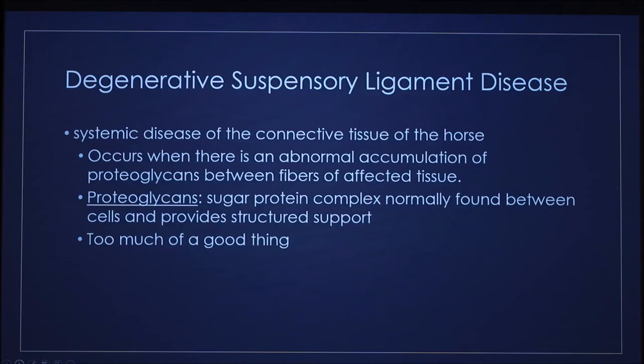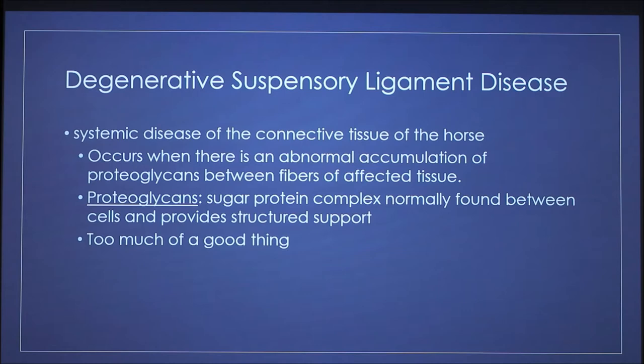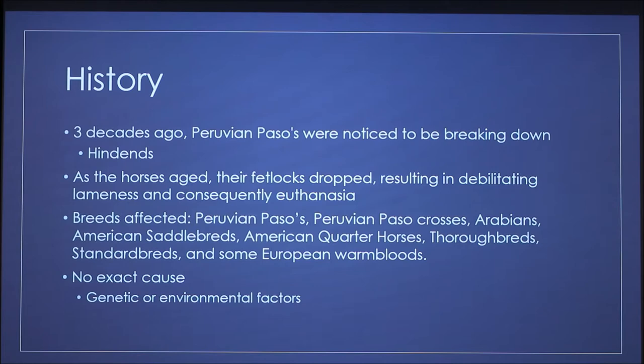Today I'm talking about equine DSLD, which stands for Degenerative Suspensory Ligament Disease in horses, but also goes by ESPA, which is Equine Systemic Proteoglycan Accumulation. It is a systemic disorder of the connective tissue of the horse. It occurs when there's an abnormal accumulation of proteoglycans between the fibers of the affected tissue. Proteoglycans are sugar-protein complexes normally found between the cells that provide structure for the suspensory ligament.